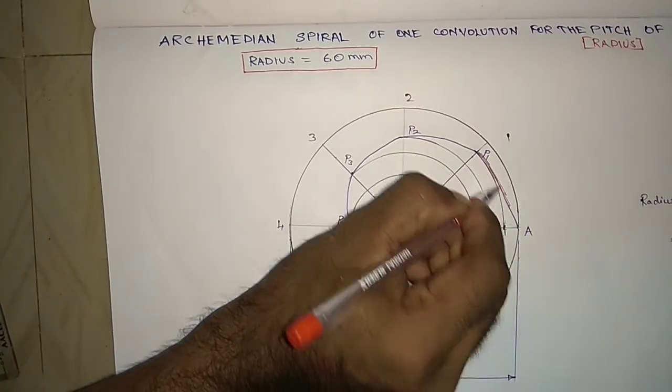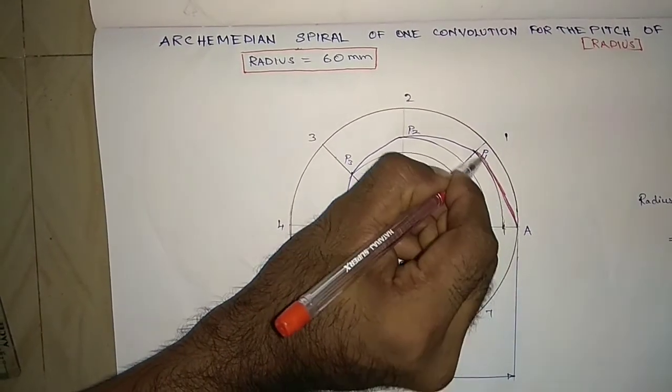So if you draw smoothly as a curve, that's it. That is the Archimedean spiral.